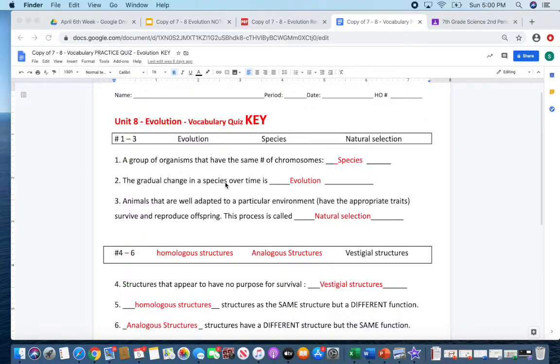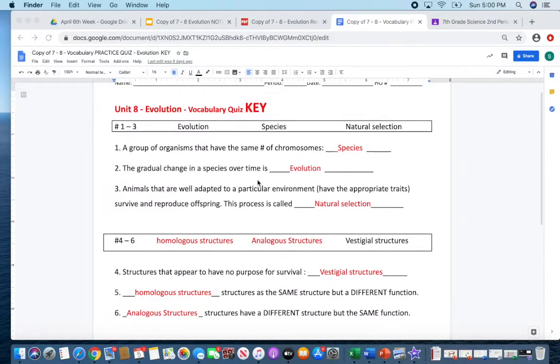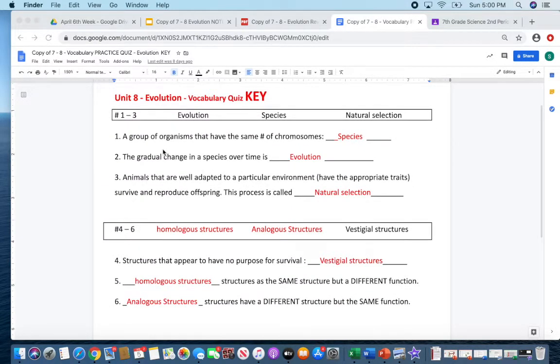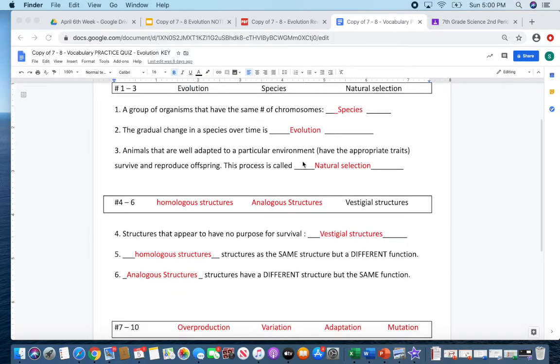I'm going to go over the two review sheets that you guys can use to help take your test. So the first one is the evolution practice quiz that you guys retook already. Please know that species are organisms that have the same number of chromosomes. Evolution is a change in species over time. This is probably going to be a test question.